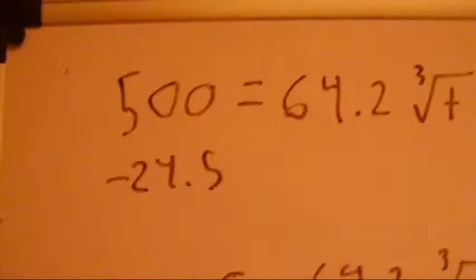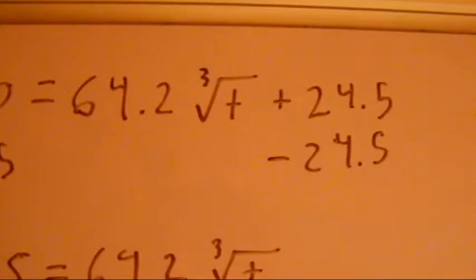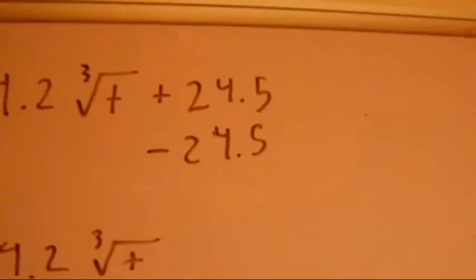It's just subtract, divide, and multiply. I could do this question myself. 500 equals 64.2 times the cube root of t plus 24.5.